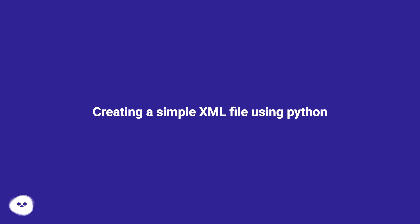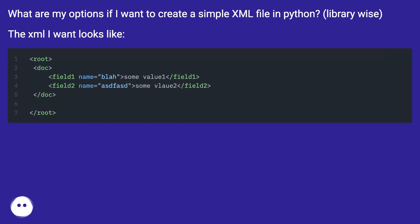Creating a simple XML file using Python. What are my options if I want to create a simple XML file in Python?